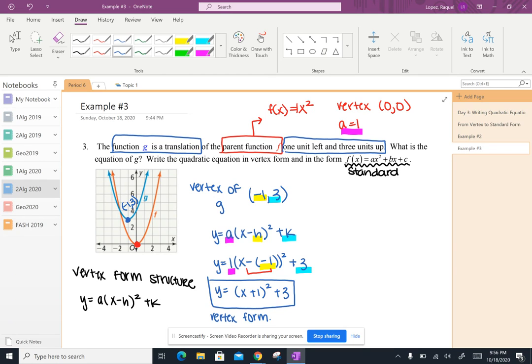And if I'm looking at my vertex form, it makes sense with the things that we've learned about transformations, right? If I've got a plus inside of here, that means I'm moving to the left. And if I've got a plus on the outside of my parentheses, then that means that I'm moving up.